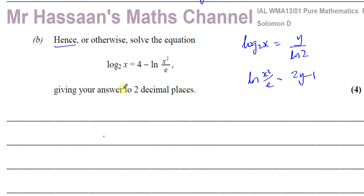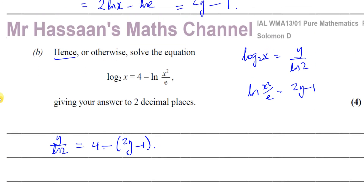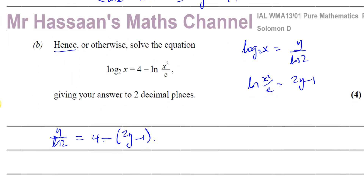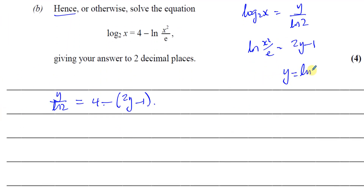So the equation is: log base 2 of x equals 4 minus ln(x² / e). We already changed log base 2 of x to y over ln(2). And ln(x² / e) was changed to 2y minus 1 in the previous part. So we have: y over ln(2) equals 4 minus (2y minus 1), which simplifies to 4 minus 2y plus 1, giving 5 minus 2y.